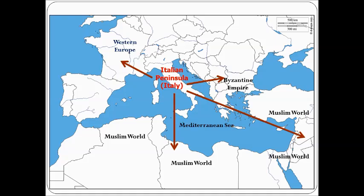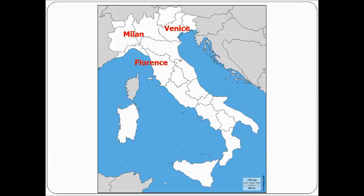The Italian Peninsula becomes the beginning of the Renaissance, and it really is because it's the center of trade. To the west is Western Europe, to the south and east is the Muslim world, and to the east is the Byzantine Empire. Being in the center of this allows them to trade and become wealthy. So its geographic location directly leads to Italy becoming the birthplace of the Renaissance. There will be three main cities: Milan, Venice, and Florence. We'll spend more time on Florence, Italy.